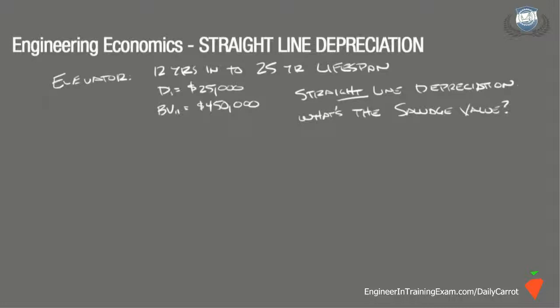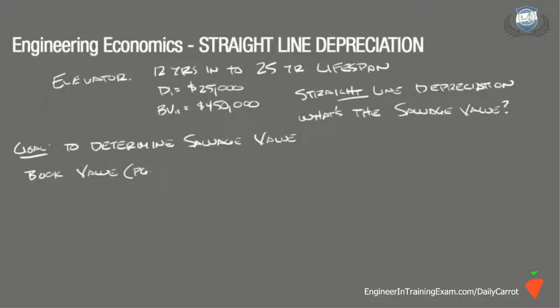Here's the solution. The goal is to determine what the salvage value is for the specified piece of equipment at this facility. We are given limited information, but taking the details we do have combined with the formulas we know for straight line depreciation, we can work our way backwards to determine the salvage value. To determine the book value for any year within the useful lifespan, we can refer to the formula found on page 115 of the NCES Supplied Reference Handbook. It states the book value is equal to the initial cost minus the accumulative depreciation through year J.